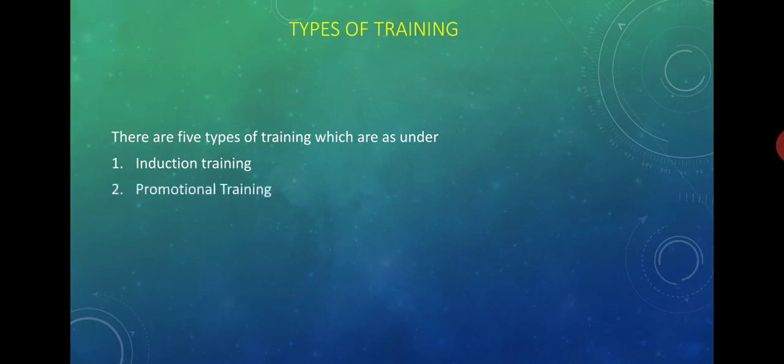The next type of training is promotional training. In an organization, training is given to existing employees to meet the requirements of a higher post. Such training is called promotional training. For example, if an employee working as a supervisor is selected for a higher officer post, training is given to prepare them for the responsibilities of that higher position.